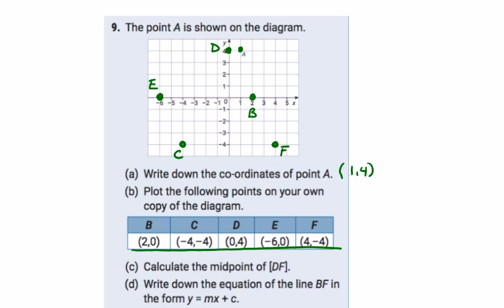And then we are asked to find the midpoint of DF. Let's have a look first. D is 0, 4. F is 4, minus 4. So we're going to add them and divide by 2 to get the midpoint. We're going to get 4, 0. And we add 2, 0 if we divide. So 2, 0 is the point B, you can see.